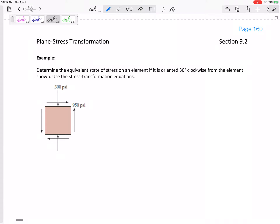All right, so let's look at this problem. We are given these stresses at its original orientation. We want to know the equivalent state of stress on an element if it is oriented 30 degrees clockwise from the element shown.